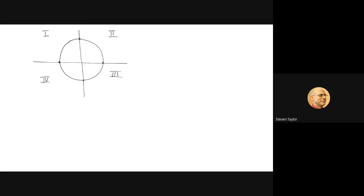I'm going to redraw them over here on the right. Region one looks like this — it is going uphill from left to right, so this is positive. The slope is getting shallower, it's getting flatter. If something's getting flatter, we call it decreasing. So region one is positive decreasing.